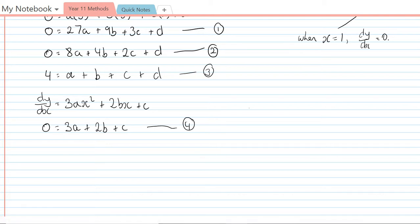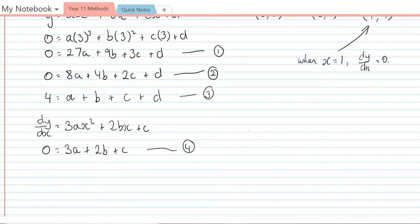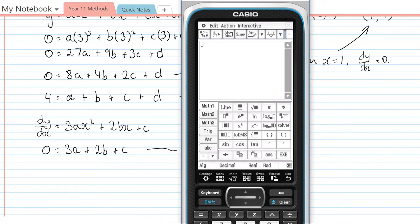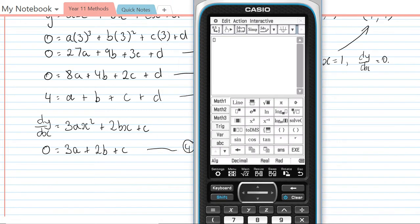That being said, we still have four equations and it's not very nice to have to do these without a calculator because the algebra involved is fairly intense. So what I'm going to do is bring up the calculator. Our first equation is... actually before I even do that I better set up the simultaneous equation solver. I need to have four rows for four equations.